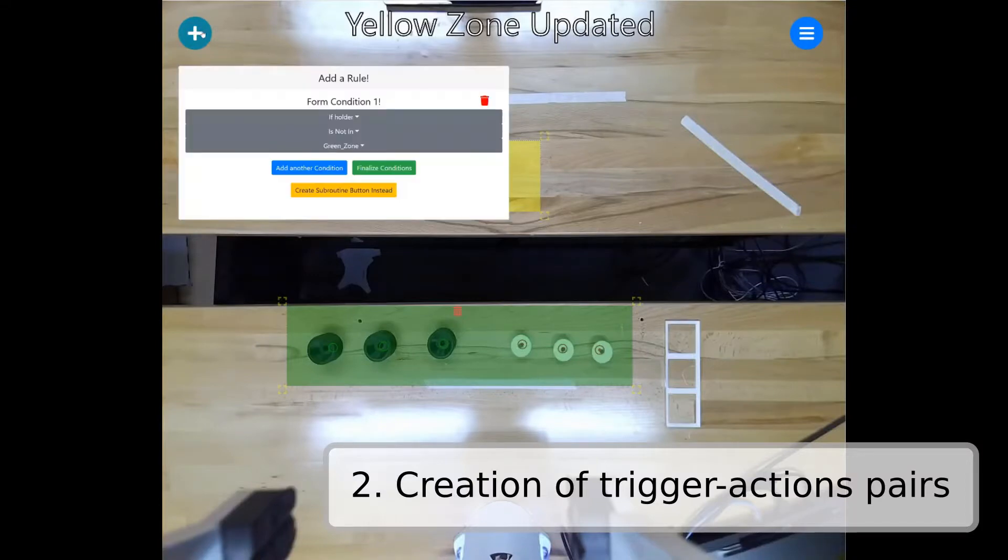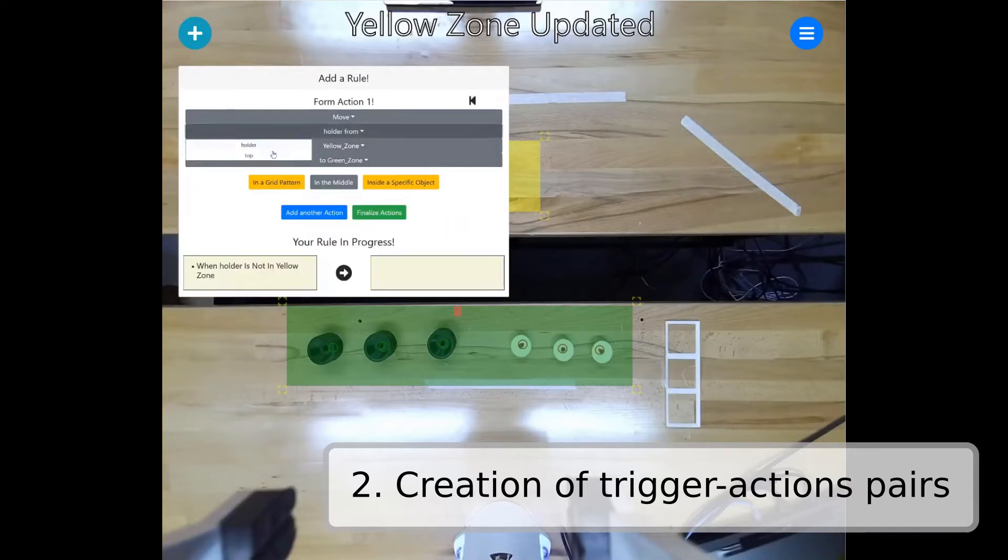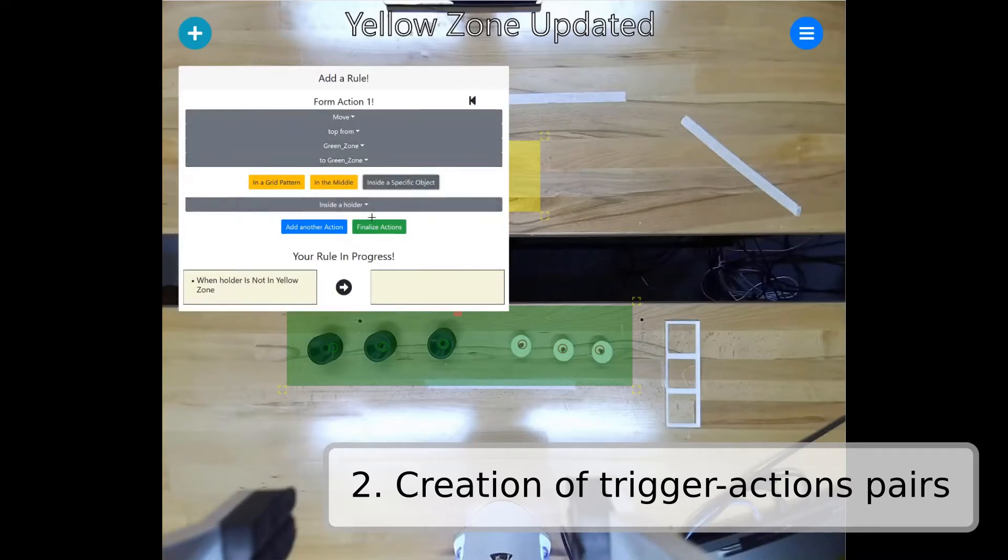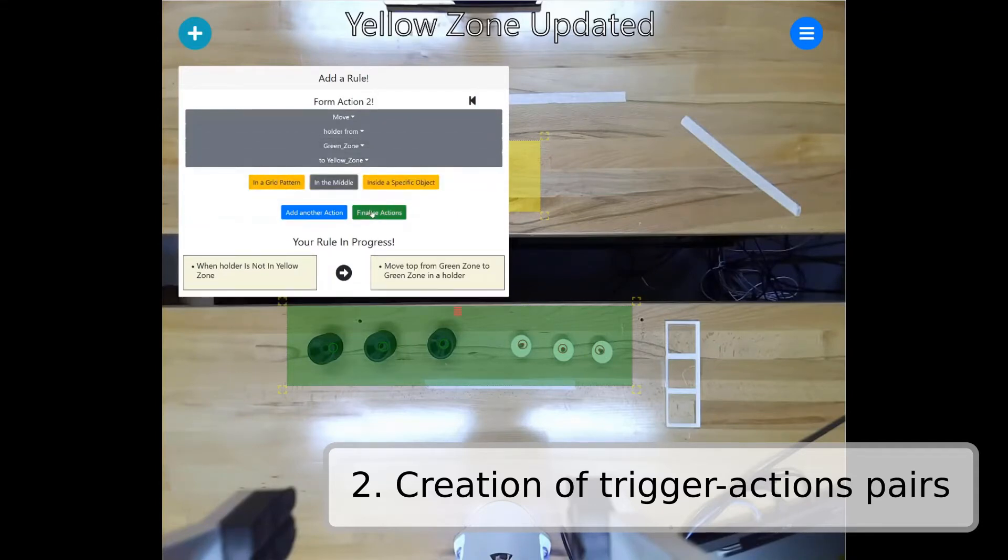The user can then create a trigger action pair specifying what the robot should do and when. In this example, the trigger specifies that when there is no black piece in the yellow zone representing the human workspace, the robot should stack a white piece in the green zone onto a black piece in the same zone. After this, a second action specifies that the robot should move the black piece to the yellow zone.